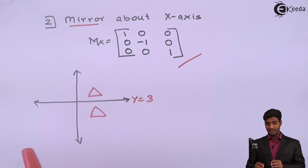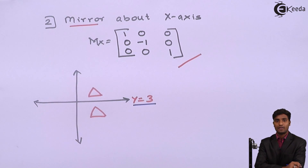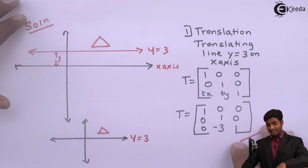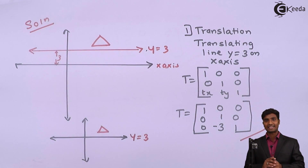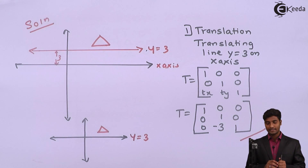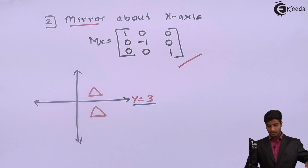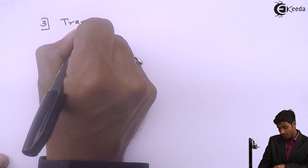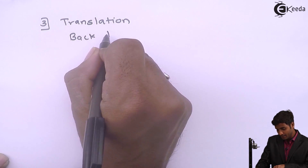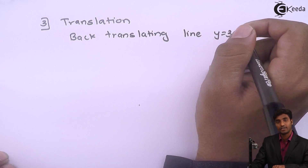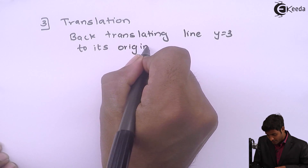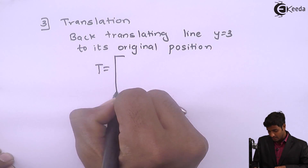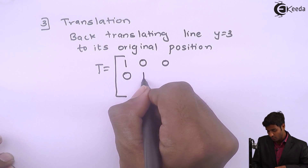We have successfully reflected the triangle about the line y equals 3, but originally the line was not on the x-axis. So we need to place the line back to its original position. For that, we have to do a back translation. The third transformation I will perform is a back translation — translating the line y equals 3 back to its original position.